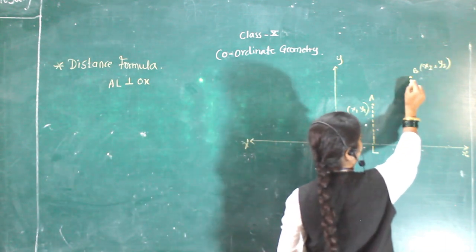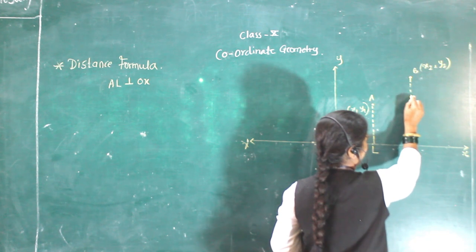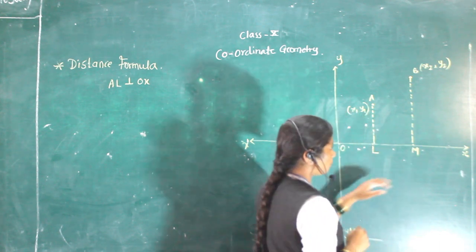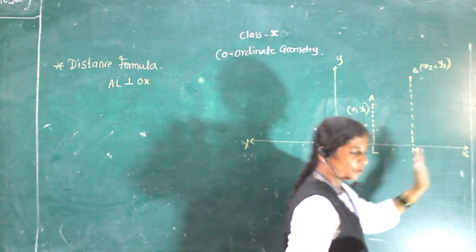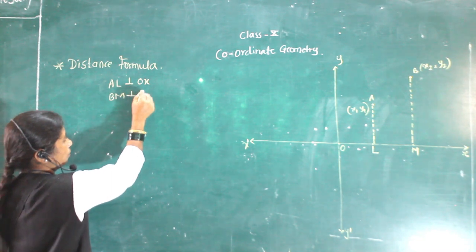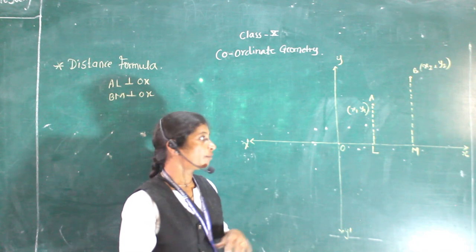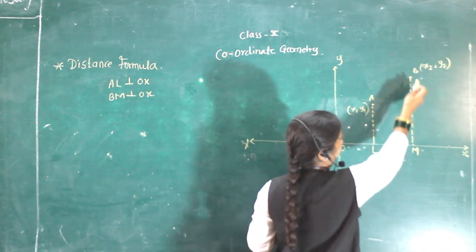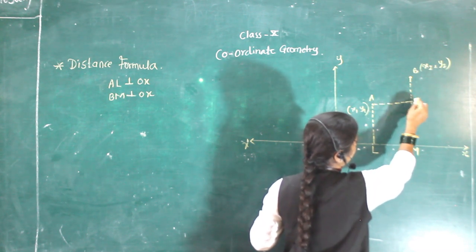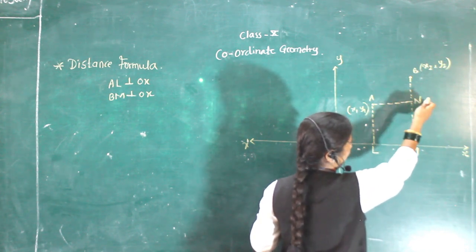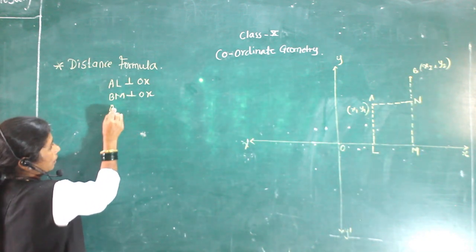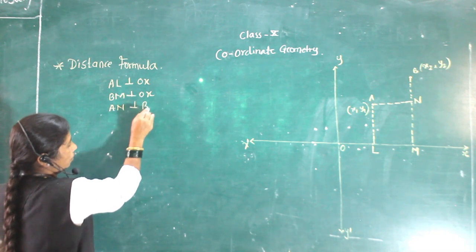Similarly, we will draw the next perpendicular distance from point B — that is BN. So BN is also perpendicular to OX. And AL is perpendicular to BN.